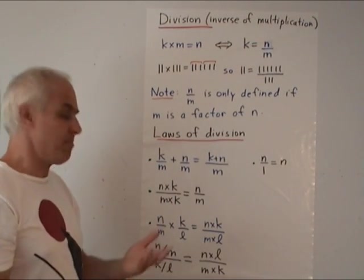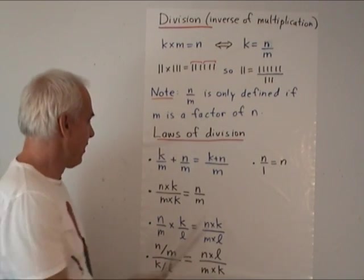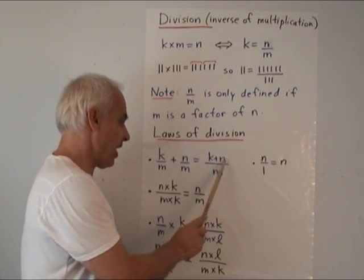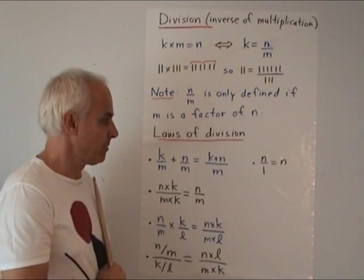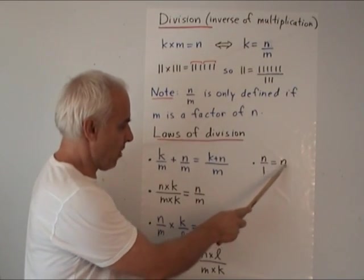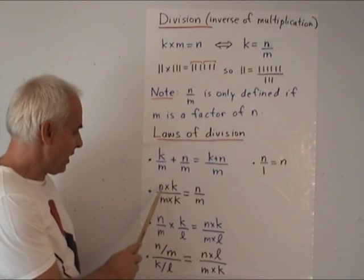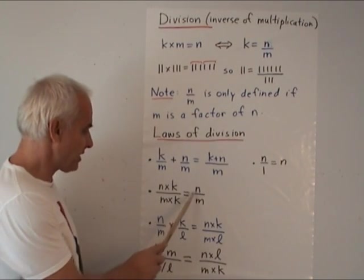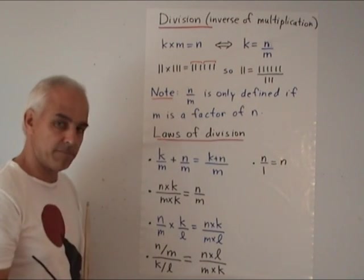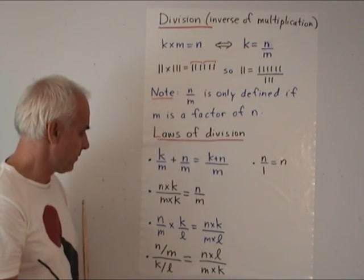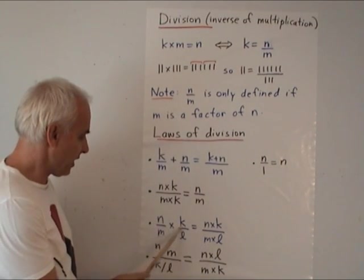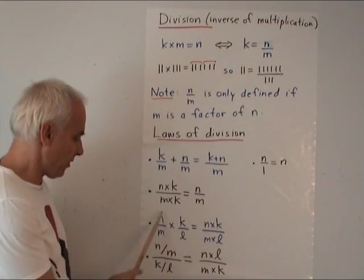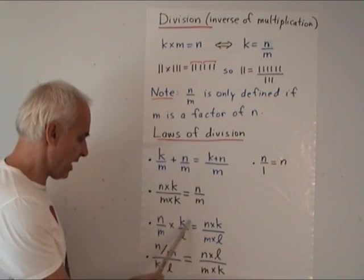Division has some rules. K over M plus N over M equals (K plus N) over M. Simple identity rule: N divided by one is N. Also: (N times K) divided by (M times K) is the same as N divided by M.